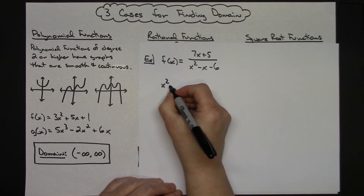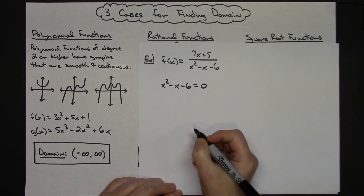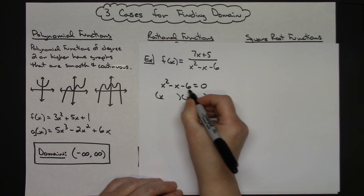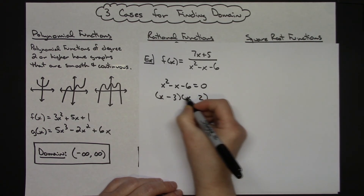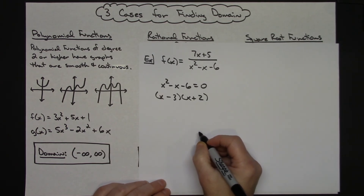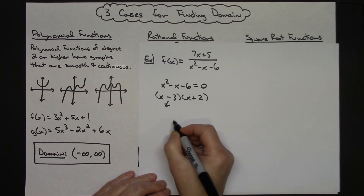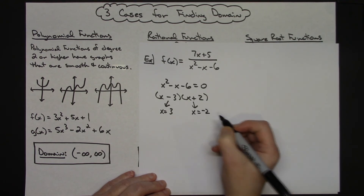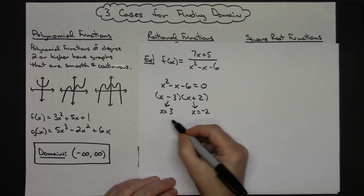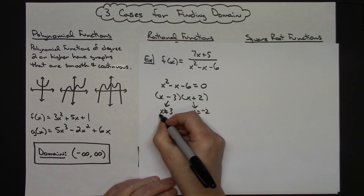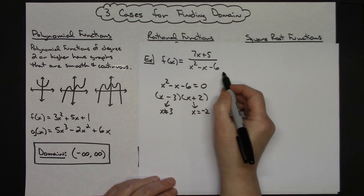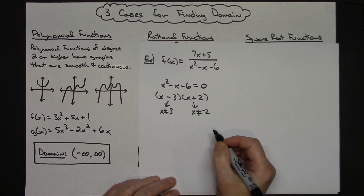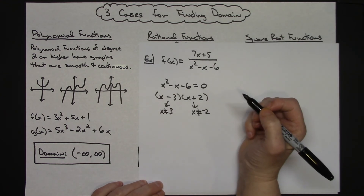That concept of taking the denominator and setting it equal to zero to find the exclusions is going to be a process. So take x squared minus x minus 6, set it equal to zero, and factor it. That factors as (x minus 3)(x plus 2) equals zero. Setting both factors equal to zero: x equals 3 and x equals negative 2. These are the exclusions — x cannot be 3 because it makes the denominator zero, and x cannot be negative 2 for the same reason.